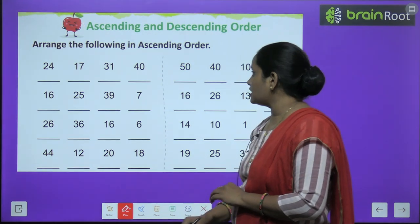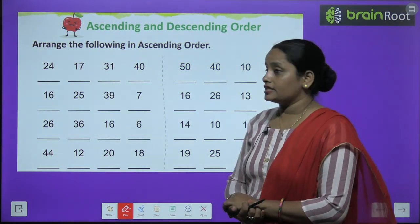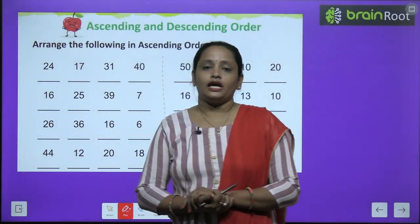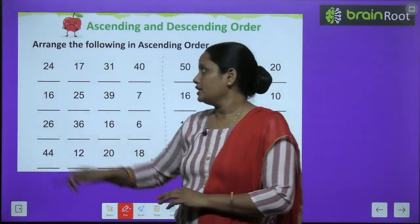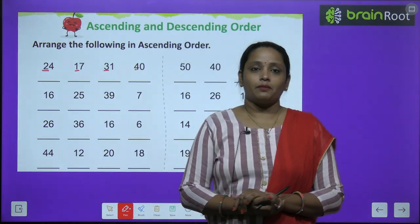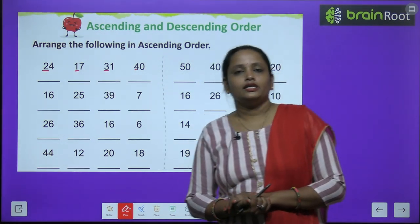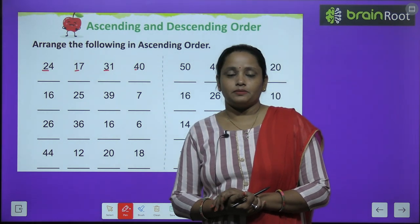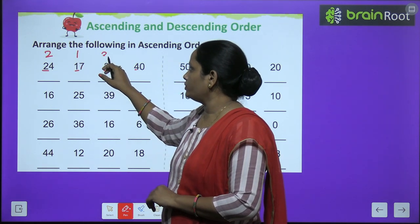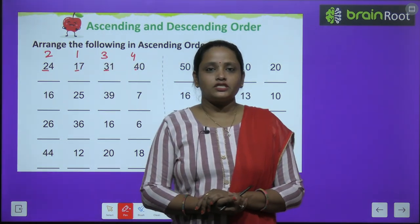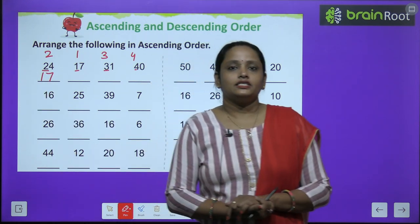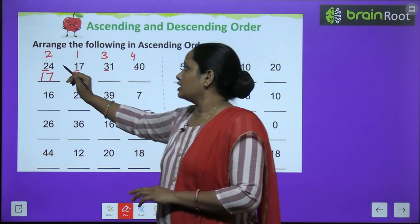So chalo let's arrange these numbers in ascending order. Ascending mein kya karna hai? Chhote se bade ki taraf jayenge. Toh pahla number hai 24. Hum kya dekhenge? Sabka pahla number dekhenge. Toh sare numbers ka pahla hai: two, one, three, four. Ab jaldi se batao sabse chhota kya hai in sab mein se? Kaunsa number sabse chhota hai? Seventeen. Toh hum likhenge one seven, seventeen.